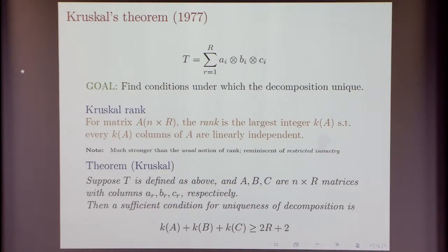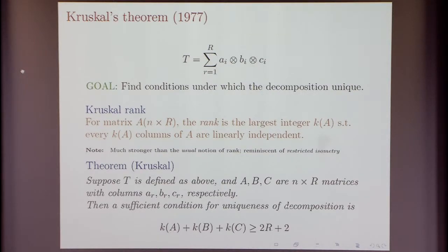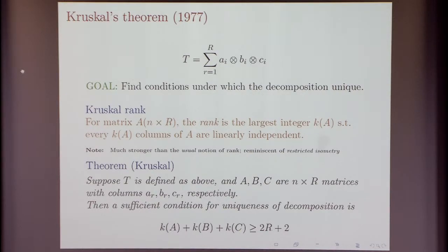Kruskal's theorem says: if you have a tensor and from its decomposition you define matrices A, B, and C whose columns are the A_i's, B_i's, and C_i's respectively, then if the Kruskal ranks of these matrices satisfy the inequality — the sum of the Kruskal ranks is at most twice the rank of the tensor (the number of terms in the decomposition) plus two — then this is the unique decomposition for the tensor.